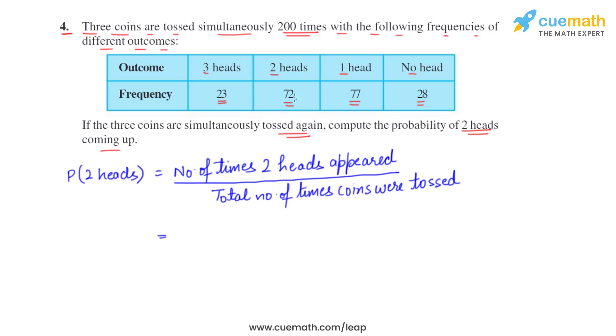Now the number of times two heads appeared are 72, and total number of times coins were tossed is 200. So 72 by 200, which can be simplified to 9 by 25.